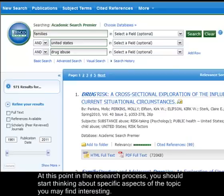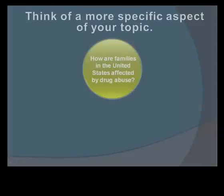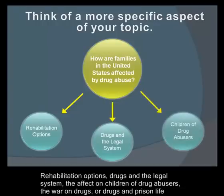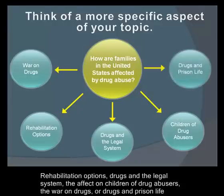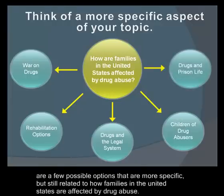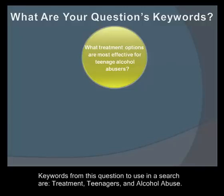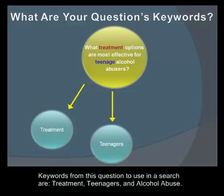At this point in the research process, you should start thinking about specific aspects of the topic you may find interesting — such as rehabilitation options, drugs and the legal system, the effect on children of drug abusers, the war on drugs, or drugs in prison life. The more specific topic chosen for this tutorial is: What treatment options are most effective for teenage alcohol abusers? Keywords from this question to use in a search are Treatment, Teenagers, and Alcohol Abuse.